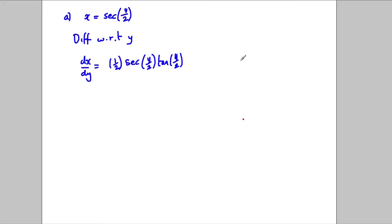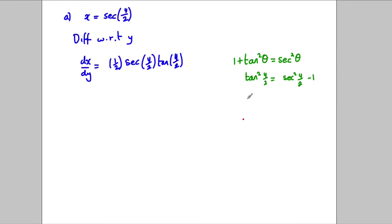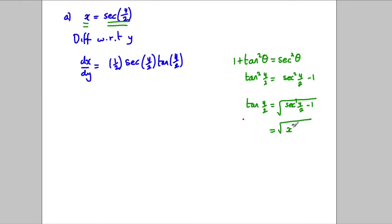I need to remember the identity 1 + tan²θ = sec²θ. In particular, tan²(y/2) = sec²(y/2) - 1, so tan(y/2) = √(sec²(y/2) - 1). Given that x = sec(y/2), this becomes √(x² - 1). So at this point, sec(y/2) = x and tan(y/2) = √(x² - 1).